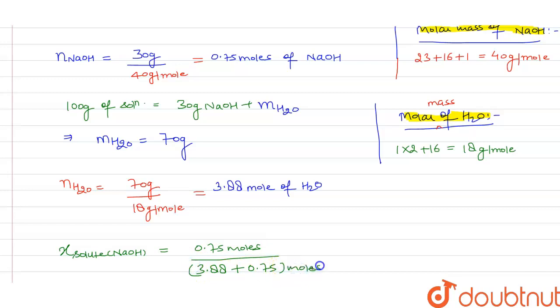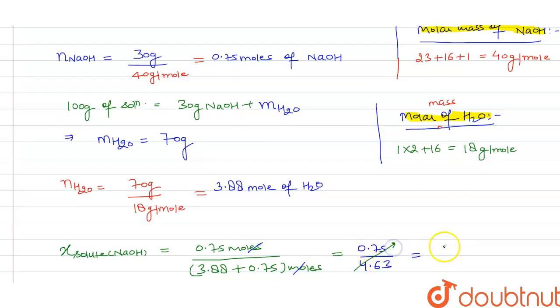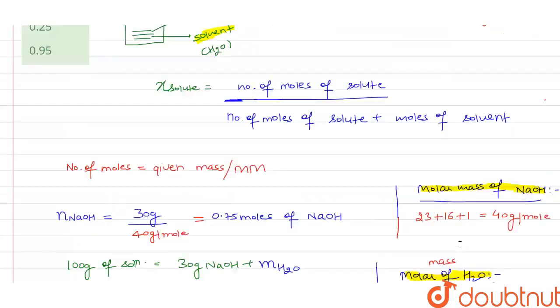On solving, we get 0.75 mole divided by 4.63, where mole cancels out. On solving, we get 0.162 as the mole fraction of NaOH acting as solute. The answer is 0.162.